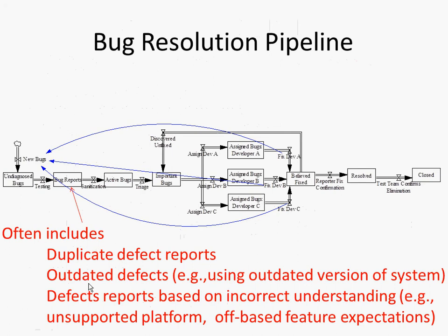Let's talk about the bug process diagrammed into several pieces. We have undiagnosed bugs — that's where bugs originate. We have a code base, and there are some undiagnosed defects; perhaps we've done some unit testing, but there are no bugs yet found. There may be a bunch of hidden bugs in there we don't know about. As we test it, those become reported defects — somebody notices something's going wrong and reports it. We call those bug reports.